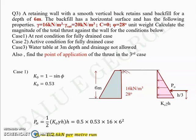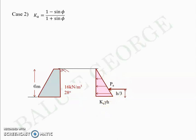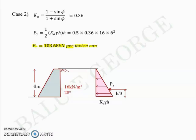Case 2 is similar to case 1 but K0 is replaced by Ka. Ka = (1 − sin φ)/(1 + sin φ) with phi = 28° gives Ka ≈ 0.36. Pa = ½·Ka·γ·H² = ½ × 0.36 × 16 × 36 ≈ 103.68 kN per meter run, acting at H/3 from the base.